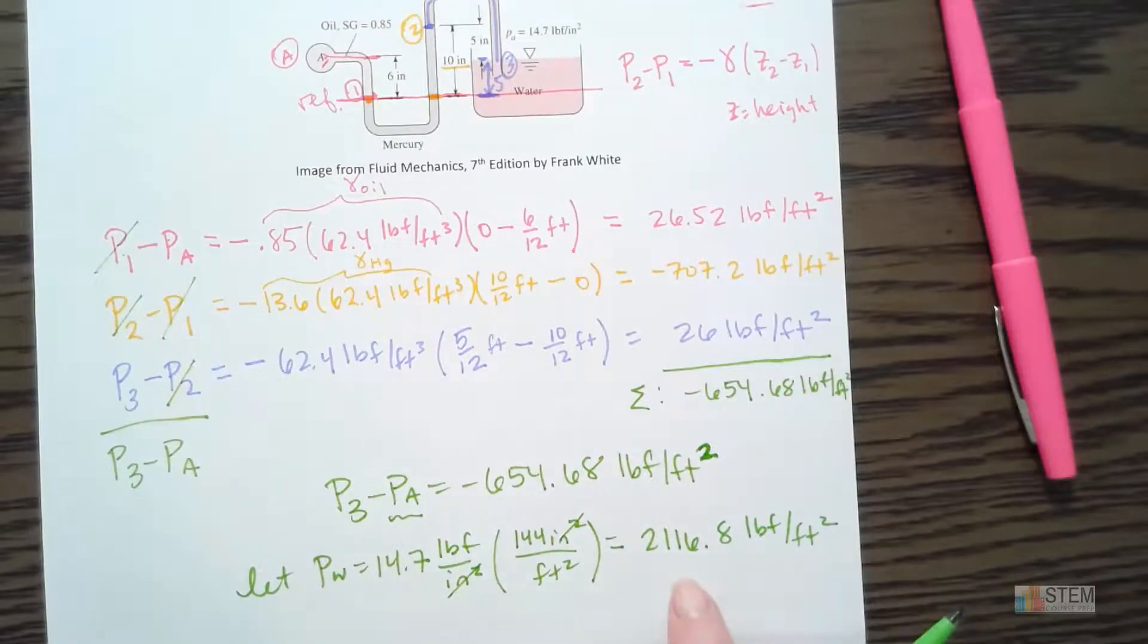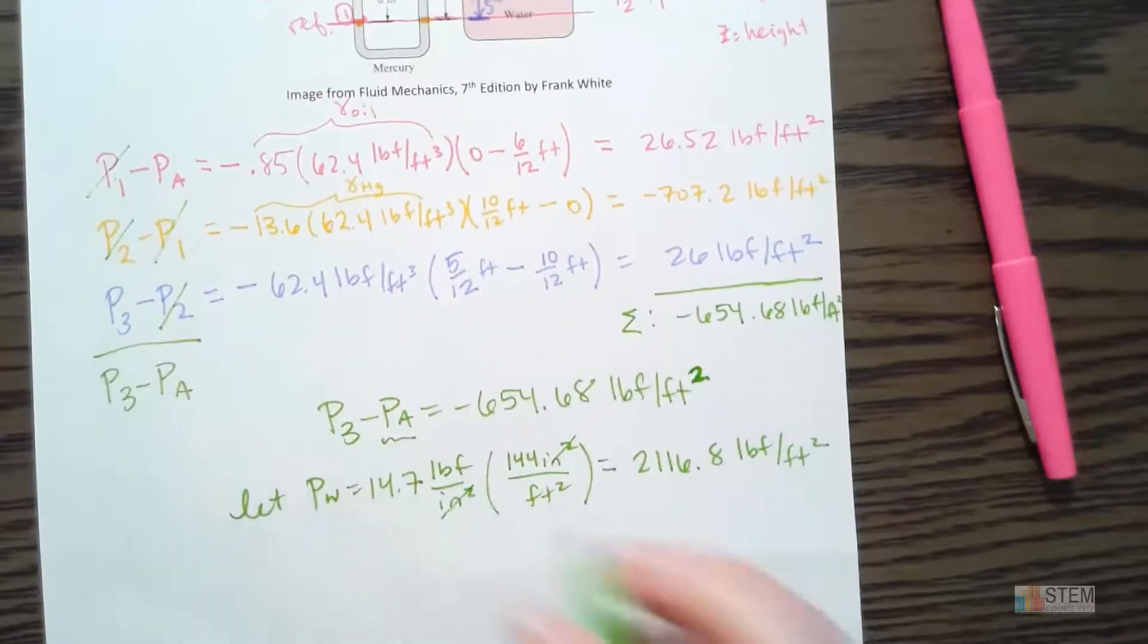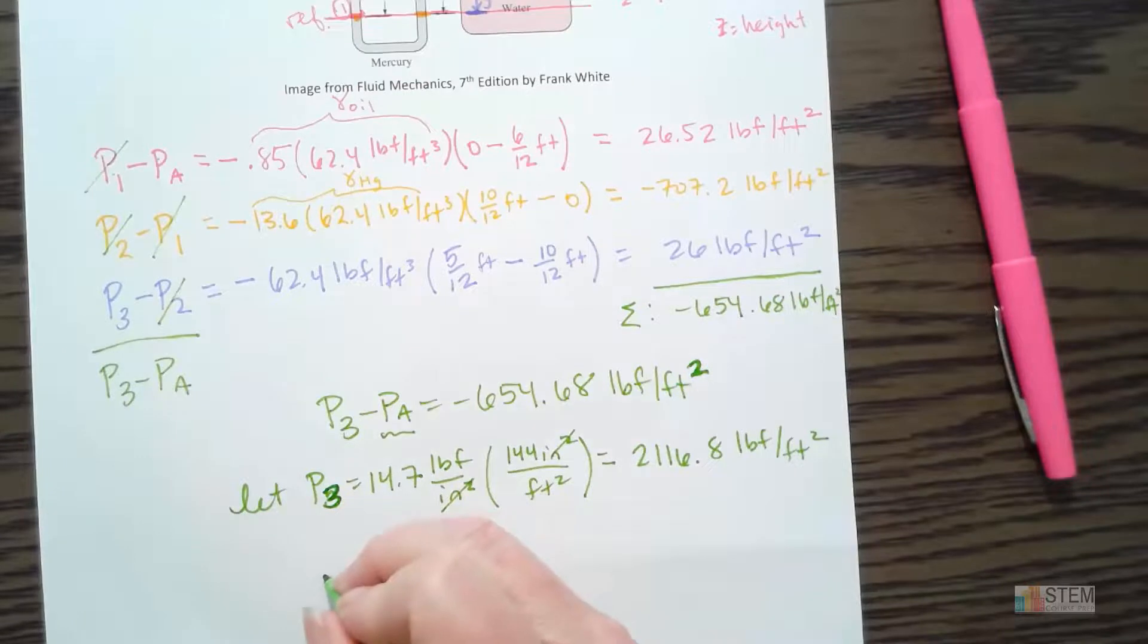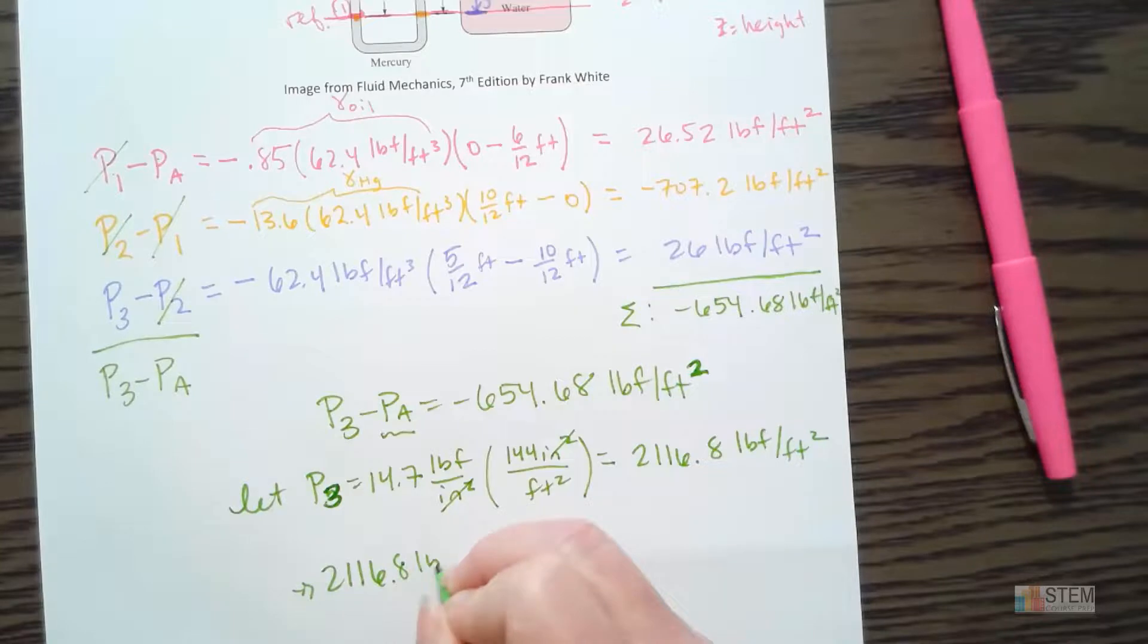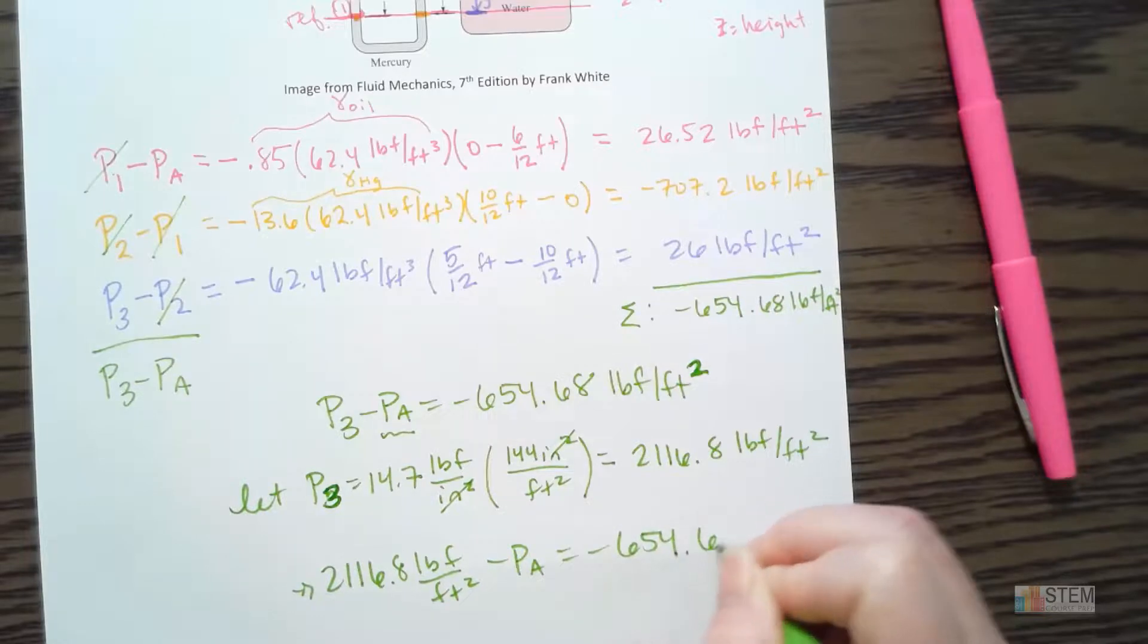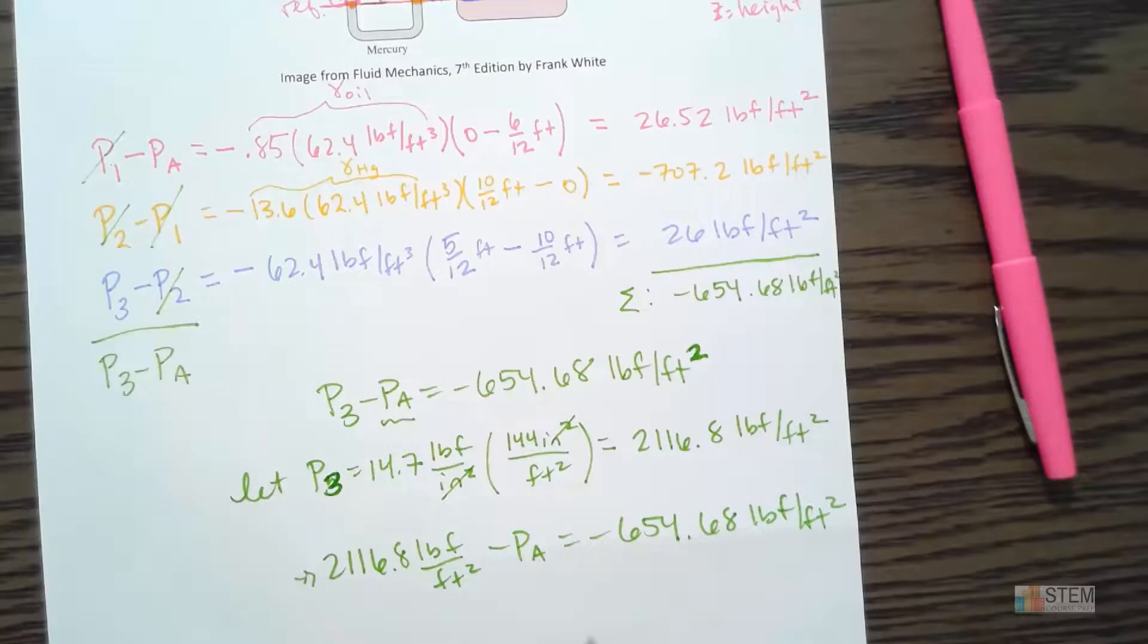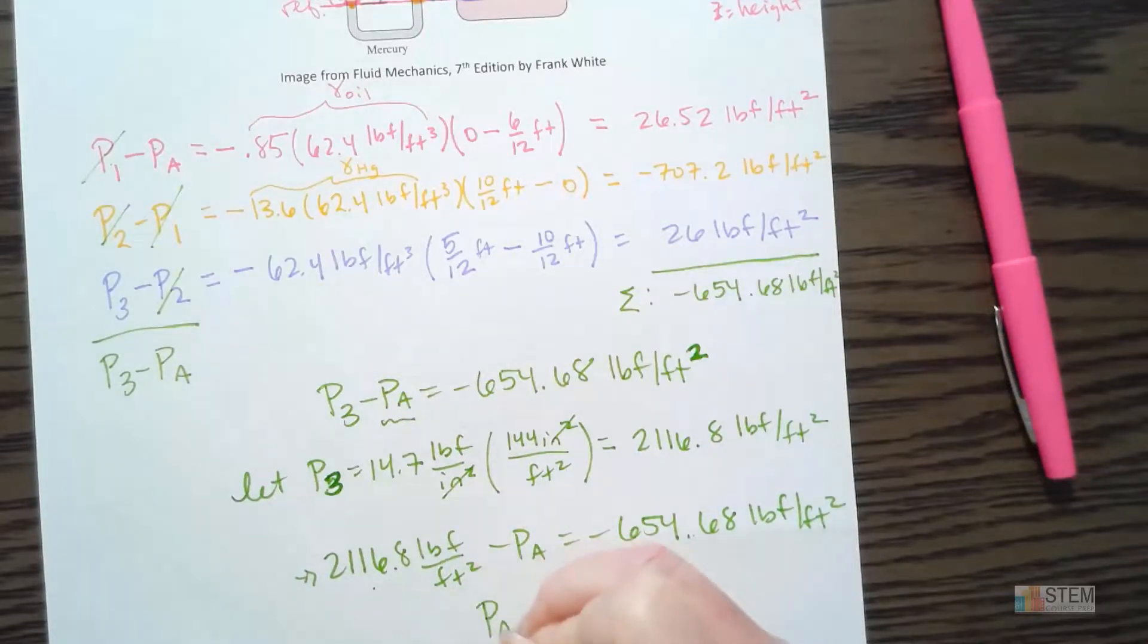Now let's take this, plug it in for P3. Actually, I call this PW for water. Let's call it P3. There we go. Okay. So now we're going to have the 2,116.8 minus PA equals negative 654.68. And then we just solve for PA. So when I move this over, it's going to become negative. So we're going to add these together. It'll be a negative number, but I got a negative here. So the negatives will cancel. And I end up with 2,771.48.